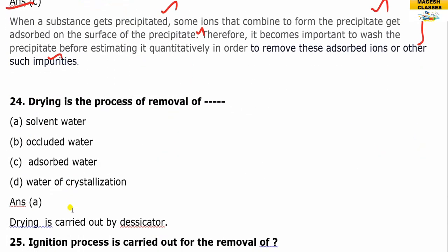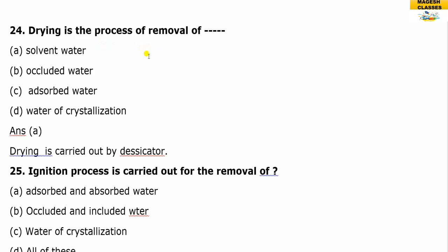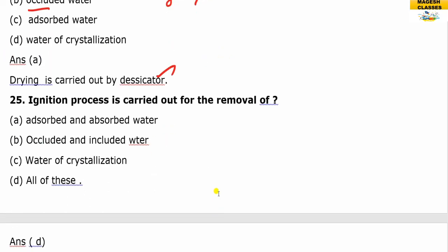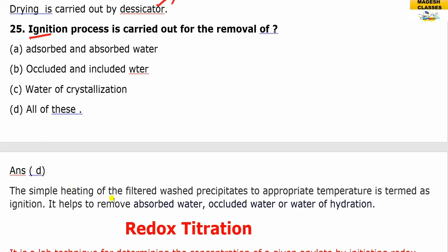Drying is the process of removal of the solvent — water — including occluded water and adsorbed gases. Drying is carried out in a desiccator. Ignition is a further step involving simple heating of the filtered and washed precipitate to an appropriate temperature, which removes adsorbed water, occluded water, and water of hydration.